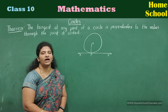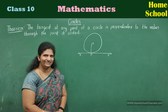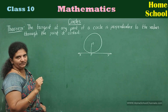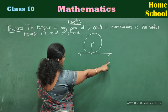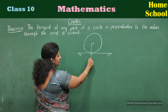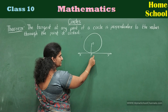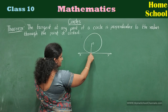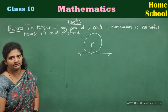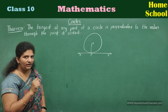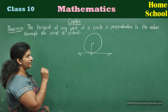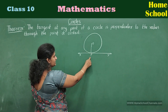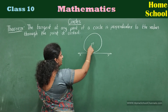In this theorem we are going to discuss about the tangent. Let me split the statement so we can understand it. The tangent XY is a tangent at any point P of a circle. The statement is: the tangent drawn at any point of a circle is perpendicular to the radius through the point of contact.